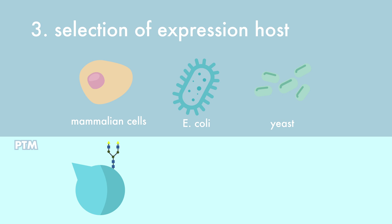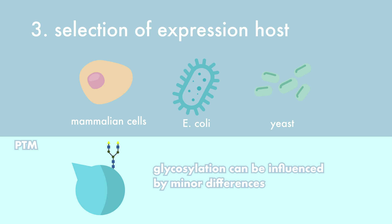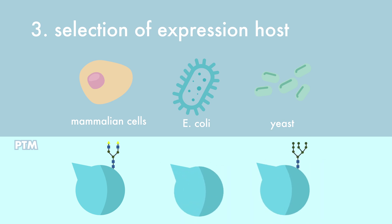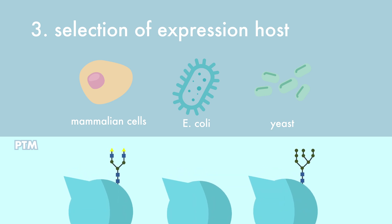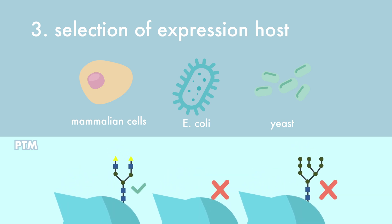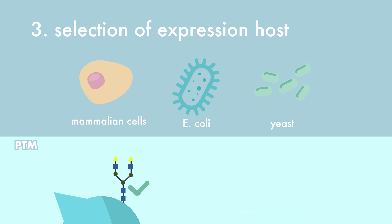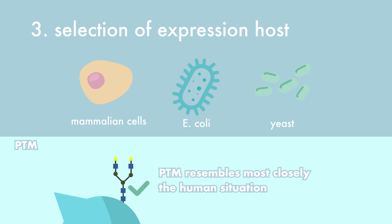Another important post-translational modification of target proteins is glycosylation. Glycosylation differs between species, between different cell types within a species, and even between batches of cell culture-produced target proteins. In yeast, the mature glycoproteins are rich in mannose, while mammalian cells have much more complex oligosaccharide structures. The main reason why mammalian cells are used as a production platform for target proteins is that post-translational modifications of the synthesized protein most closely resemble the human situation.